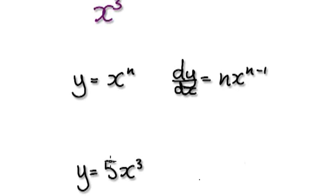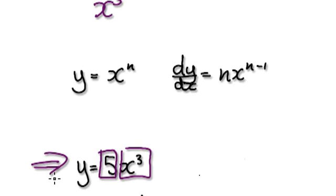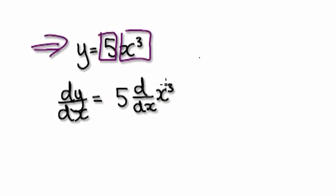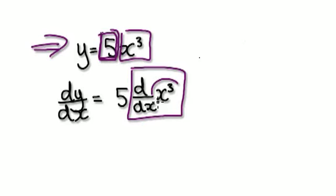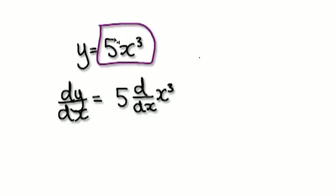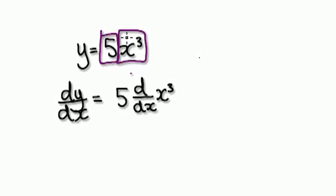So now you've got x to the power of 3, but then you've got a coefficient in front of x to the power of 3. So to differentiate this, you would keep the 5 the same and just concentrate on differentiating x to the power of 3. Visualize it as this times this, but then just take the 5 out and concentrate on differentiating x to the power of 3.